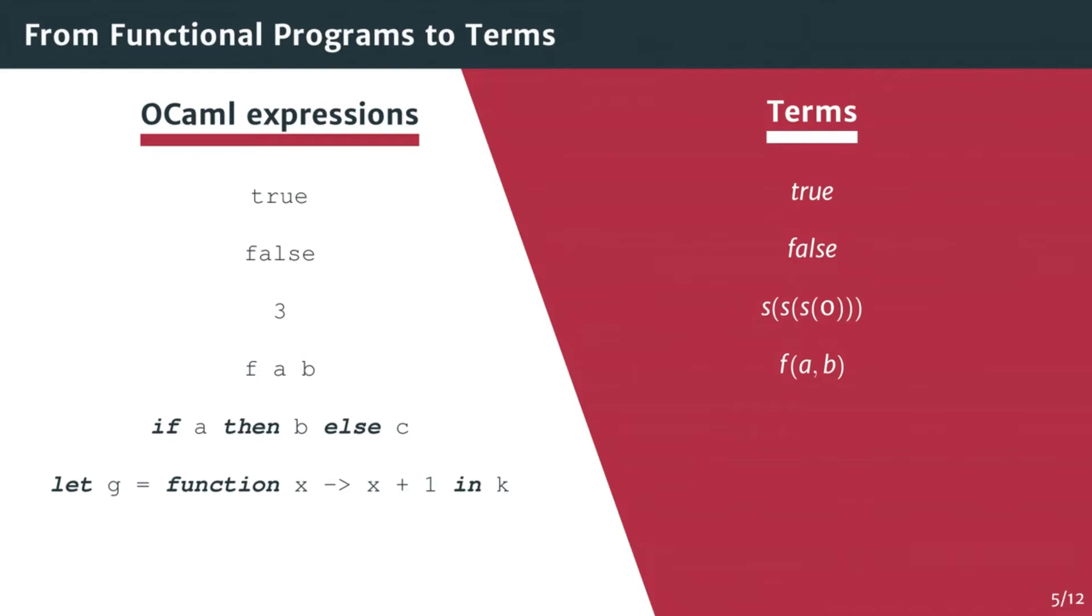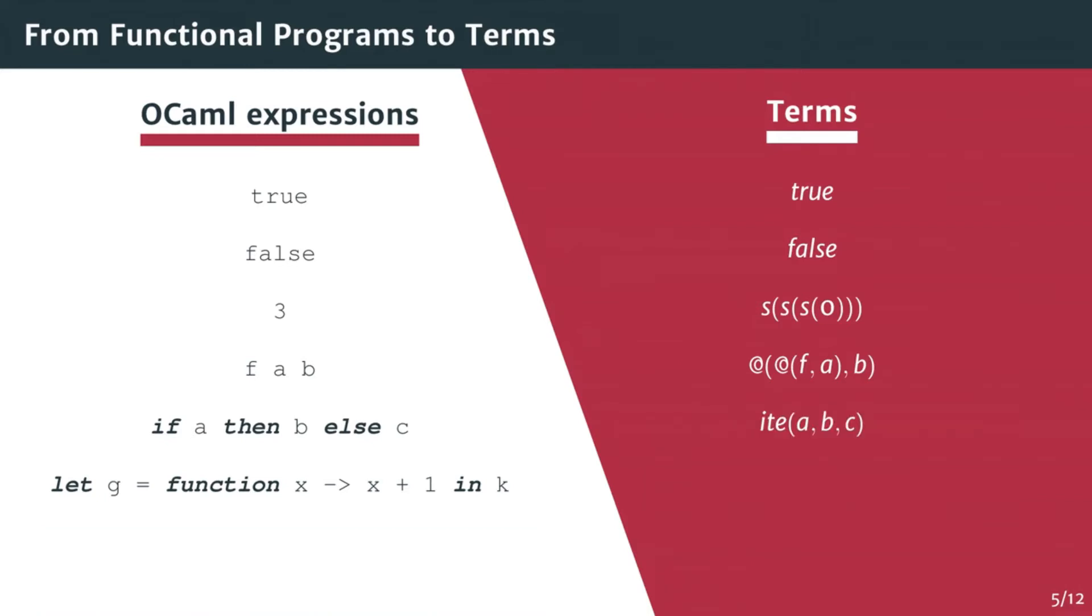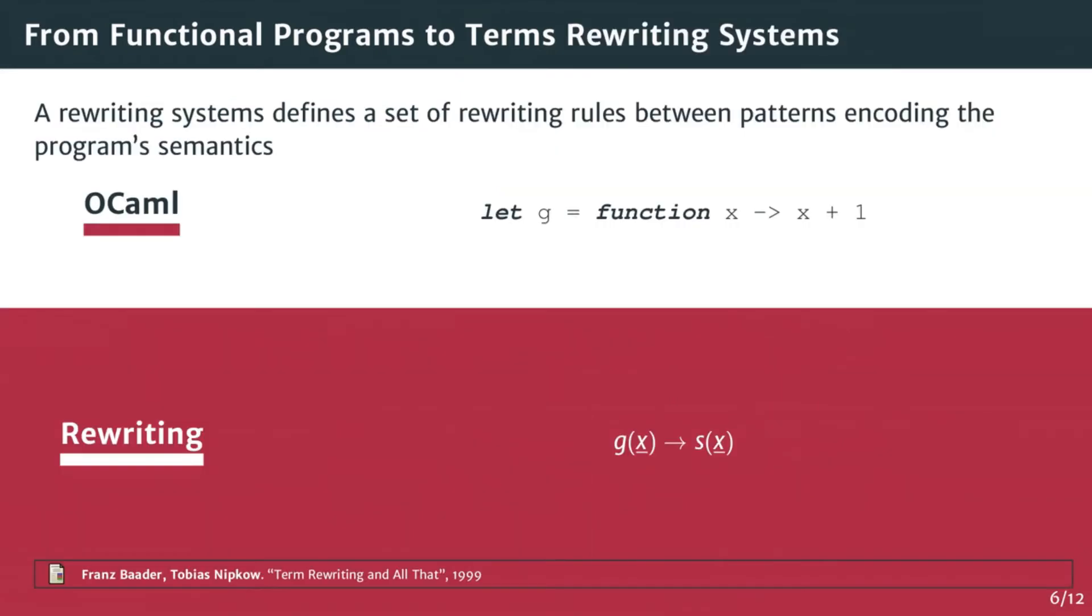However, this representation does not allow partial application of f, so instead we use the special at symbol to represent a functional application, which takes the function and its first parameter. Control structures such as the if-then-else are simply represented as terms. Finally, let bindings and anonymous functions are erased, leaving only the bound body. This is because the program's logic is preserved elsewhere as a term rewriting system.